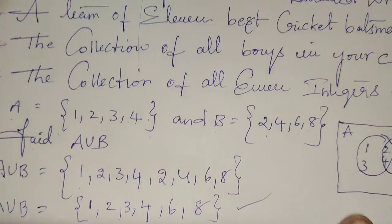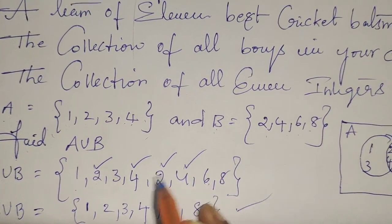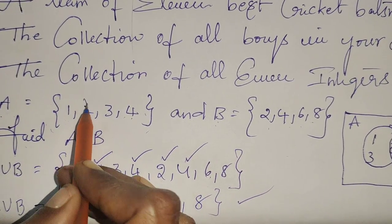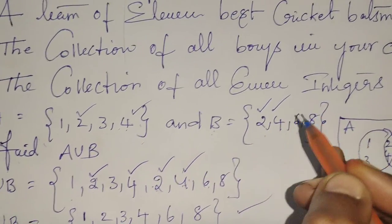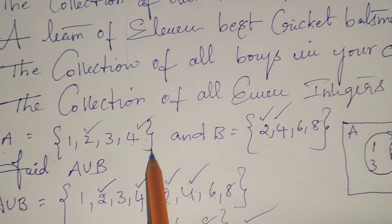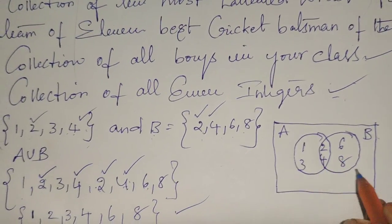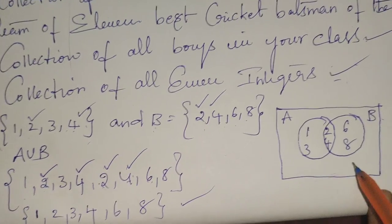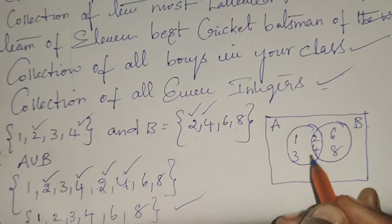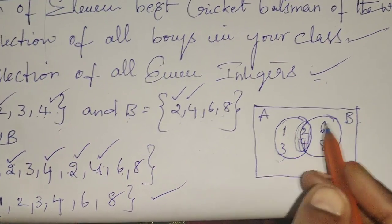See here: 2 and 4 are in set A, and also 2 and 4 are in set B. So 2 and 4 are the common elements. In this Venn diagram, 2 and 4 are the common elements placed in the intersection. This is the set of A elements and this is the set of B elements. Okay, thank you.